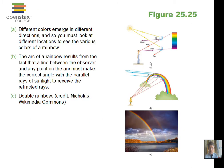Here are some drawings showing a couple of raindrops. Violet comes from raindrops that are lower, while red comes from raindrops that are higher up, with the sun behind the person. If there are multiple reflections inside the water drop, we can get a double rainbow.